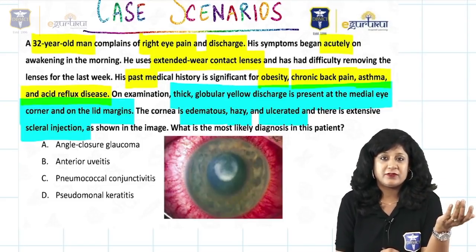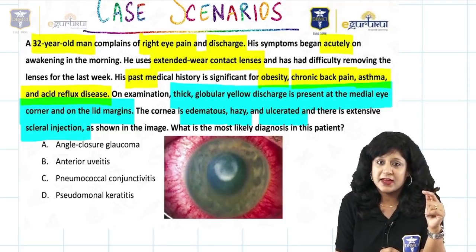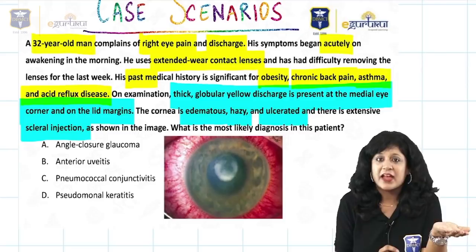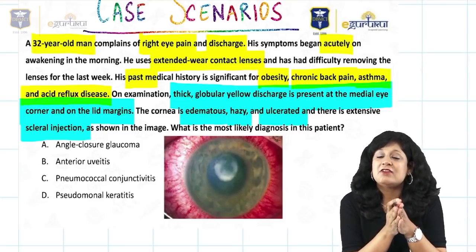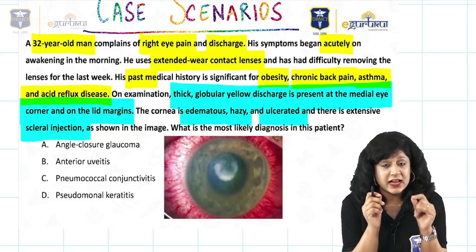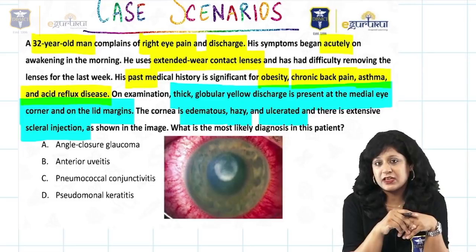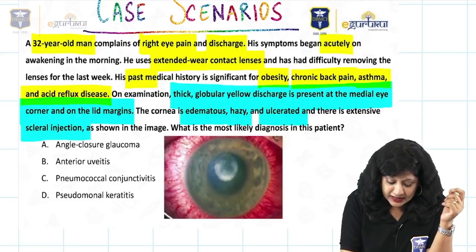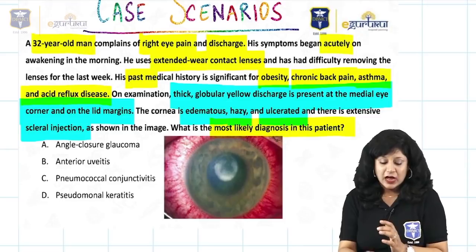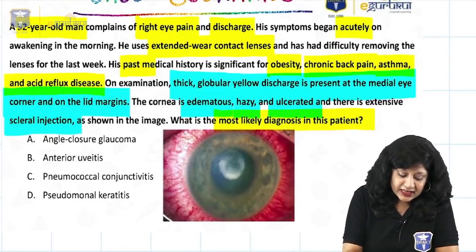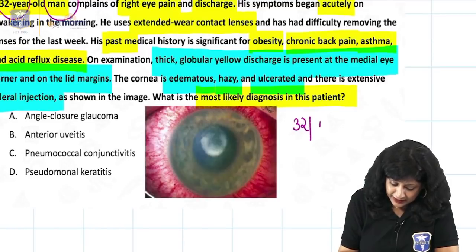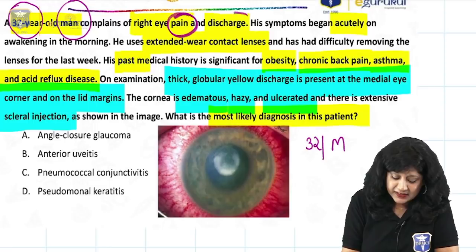This is a double advantage — they are telling you the findings and also giving the image. Sometimes they give only the image without specifying findings, or only the findings without an image. Fortunately, both are present here, but you should be able to comprehend the image even if it's not given. Now, what they are asking is the most probable diagnosis. Always first look at the age and gender of the patient — here a 32-year-old male.